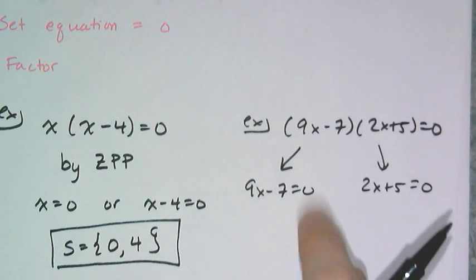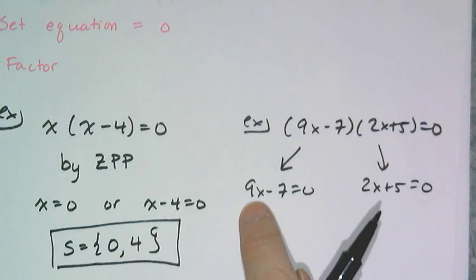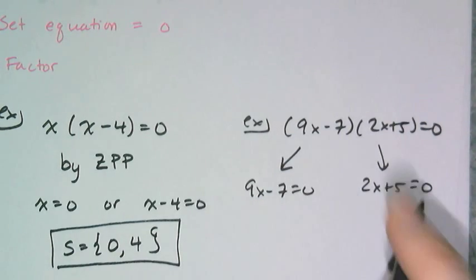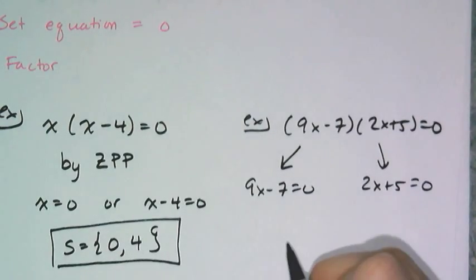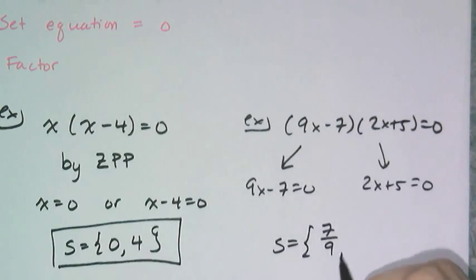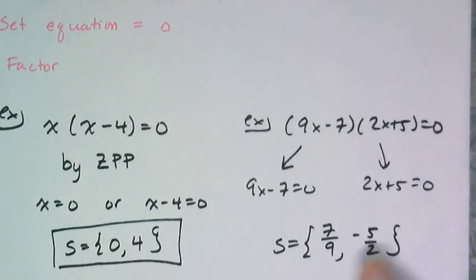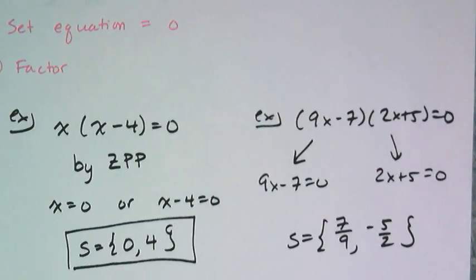At this point in the year you've gone through five-sixths of algebra, and so solving a linear equation like 9x minus 7 should seem super easy. So I add seven, divide by nine, I get seven ninths. Here I subtract five, divide by two, I get negative five halves. So my solution to my quadratic would be seven ninths and negative five halves.